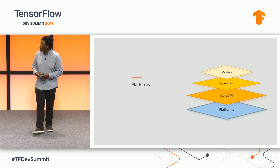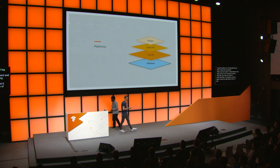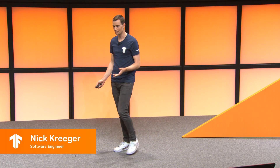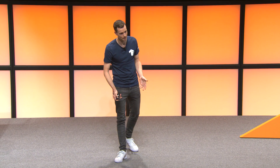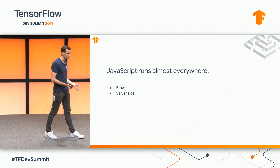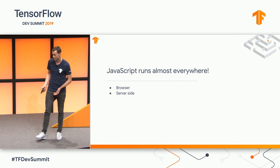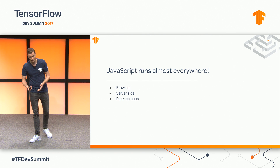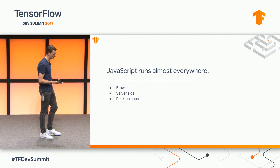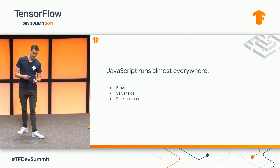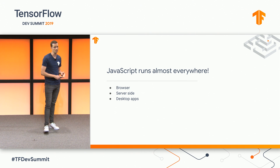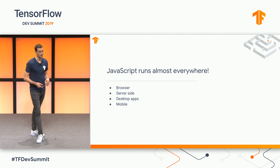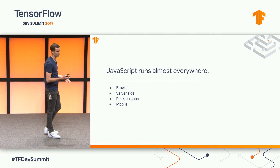JavaScript is an interesting language because it actually runs in a lot more places than you think. There's the traditional browser for running JavaScript — we all know about that. Node.js is a big server-side solution, very popular. But there's also a growing trend with JavaScript in more places. One of them is desktop applications — Electron is a very popular platform for developing applications. Those of you who have used the Spotify desktop app or Visual Studio Code — those are good examples of Electron. And JavaScript is also moving into the mobile space.